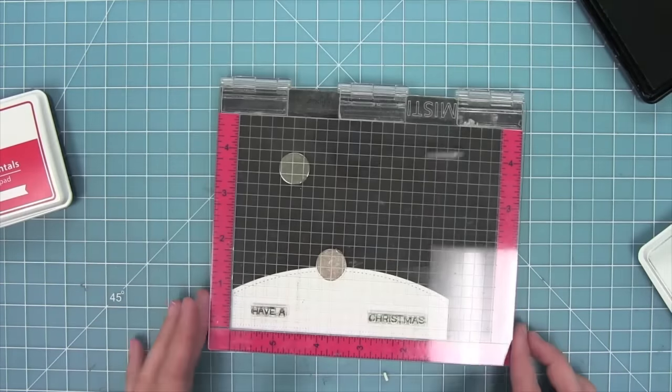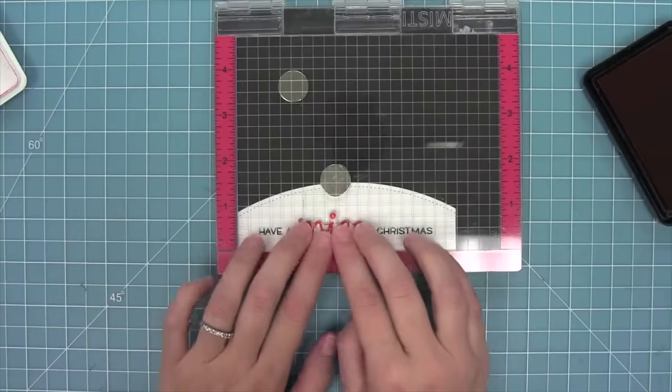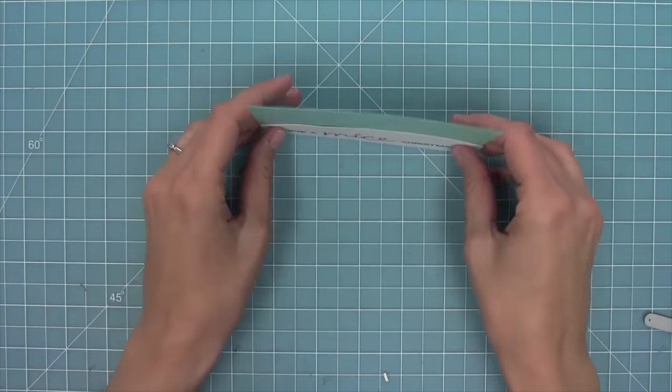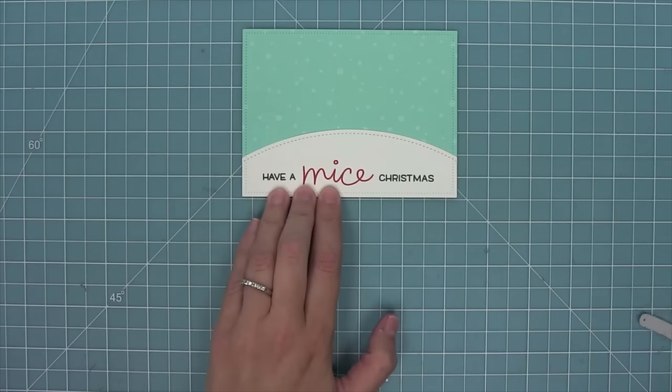Now I'm going to be using my mini MISTI tool to stamp my sentiment. I'm going to put the Have a in Christmas in Noble Fur ink and then the Mice in Lobster ink. I love the red and green to go along with that red and green present that I colored earlier.